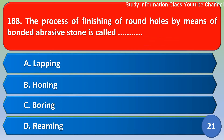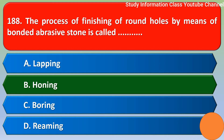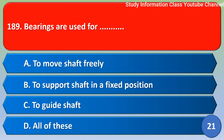Next question: the process of finishing of round holes by means of bonded abrasive stone is called — option B, that is honing. The correct answer is option B — honing.